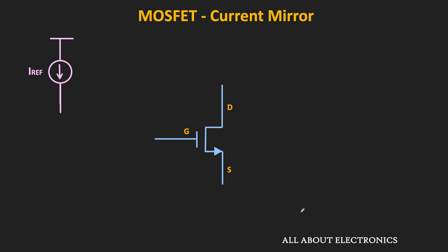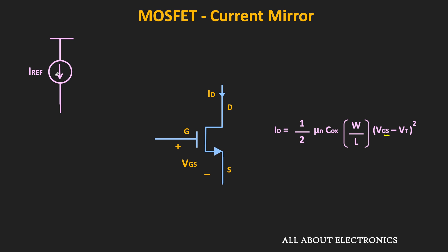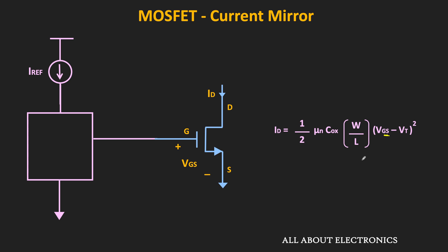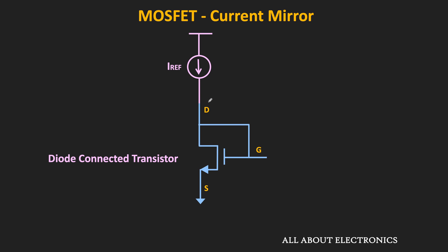We know that the MOSFET is a voltage-controlled device, and in saturation, the drain current ID can be given by this expression. So by controlling the gate-to-source voltage, this drain current ID can be changed. So if you want to copy the reference current in this MOSFET, then first we need to generate a voltage which is proportional to this reference current, and we need to apply that voltage between the gate and the source terminal of this MOSFET, so that the drain current is a function of voltage VGS. Using the diode-connected transistor, we can generate a voltage VGS which is proportional to this reference current.